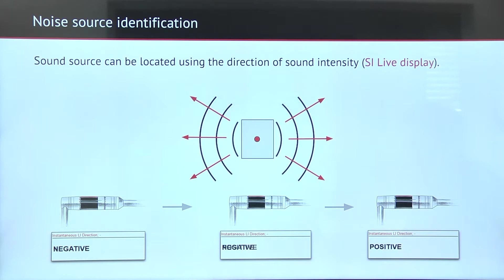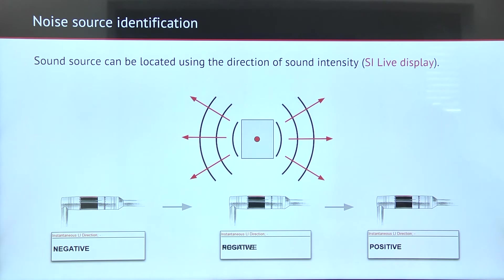Moving the probe along the sound source allows us to pin down an exact location of the sound source. The sound from the source has a different direction relative to the probe, provided that the probe retains the same direction and is moved in a straight line. When the probe is on one or the other side of the source, the direction is well defined. When the probe approaches the point directly in front of the source, the intensity is perpendicular to the probe and the sound intensity reading should be zero.